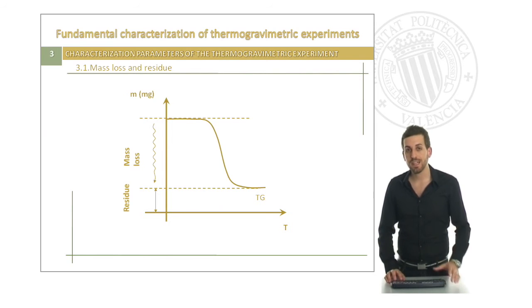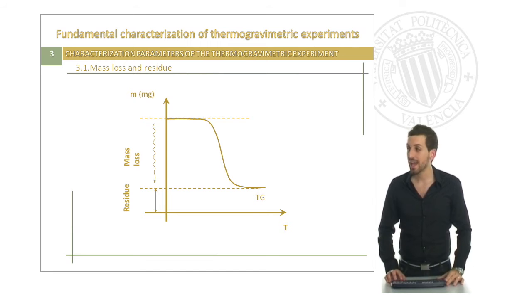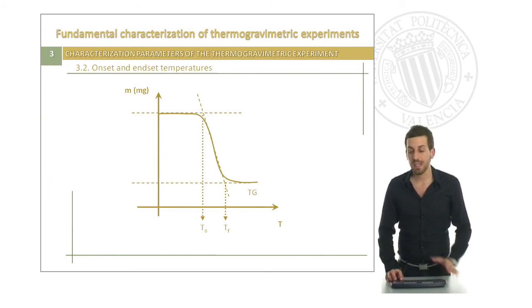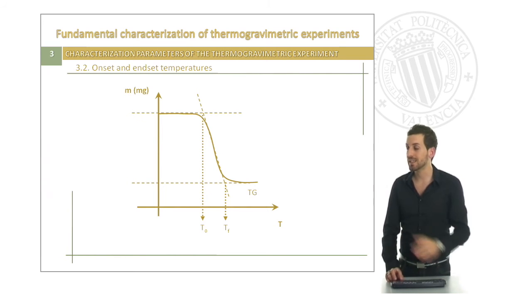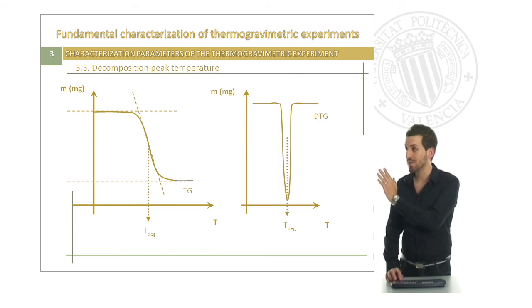How can we characterize these curves? If we have a look at this TG curve, we can see how we will see two different parameters such as the mass loss and the residue that we can have in our material if it has some inorganic compounds in it. The most important are the temperatures. In this slide, you can see the onset and endset temperatures that have been obtained by means of a tangential intercept method. The most important parameter is the decomposition peak temperature, which is the temperature in the middle of the slope that is related to the minimum of the derivative thermogravimetric curve, in which the decomposition rate is maximum.